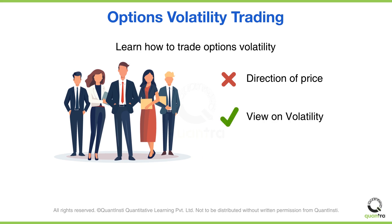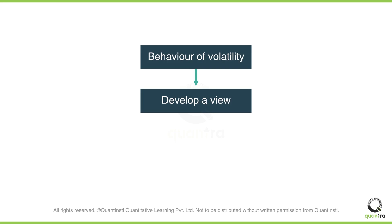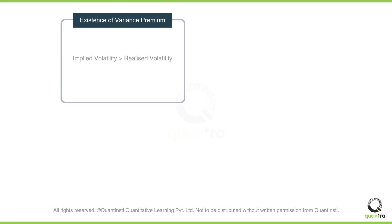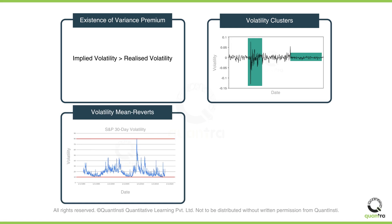Instead, you need to get an idea of whether volatility will increase or decrease and then trade on that. In this course, you will first learn how volatility behaves, which will help you develop a view on volatility. You'll also learn how to trade based on the tendencies of volatility — for example, implied volatility tends to be higher than realized volatility. In the short term, high volatility is usually followed by high volatility and vice versa for low volatility. Additionally, in the longer term, it tends to mean revert — in other words, it is range-bound. So if you want to get an idea of long-term volatility, you can reflect on what it has been in the past.